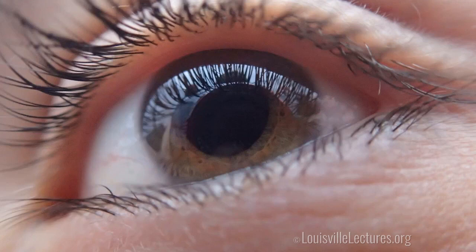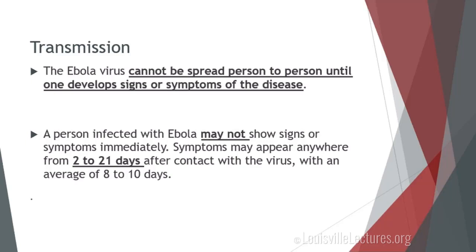Regarding transmission: the virus is transmitted through broken skin or through the mucous membranes of the eyes, nose, and mouth. Contact with an infected animal, body fluids of a person who is sick or has died of Ebola virus disease, or contact with objects contaminated with the virus can allow for transmission. Importantly, the Ebola virus cannot be spread person to person until one develops signs or symptoms of the disease. A person with Ebola may not show signs and symptoms immediately — this is the incubation period. Symptoms can appear anywhere from 2 to 21 days.